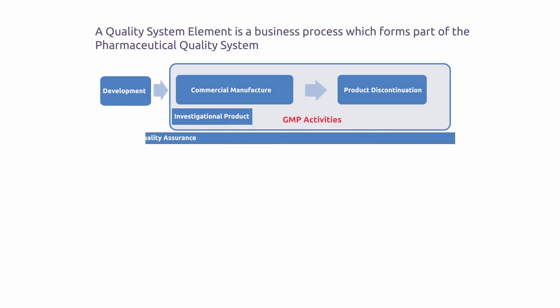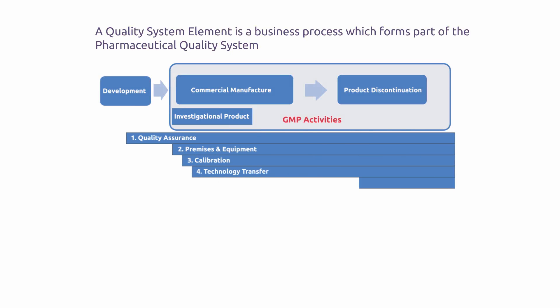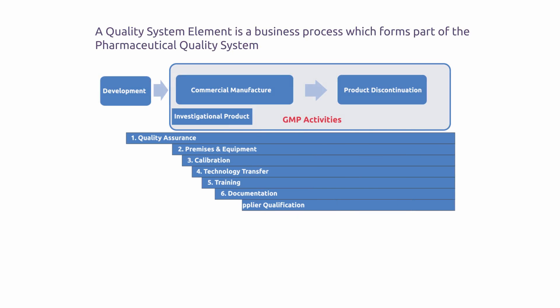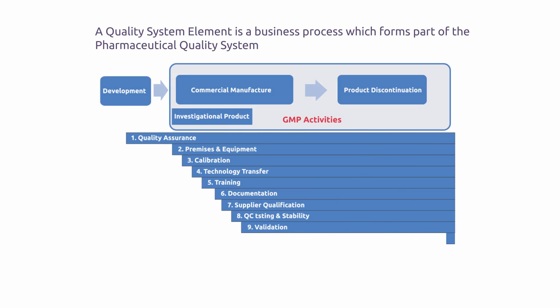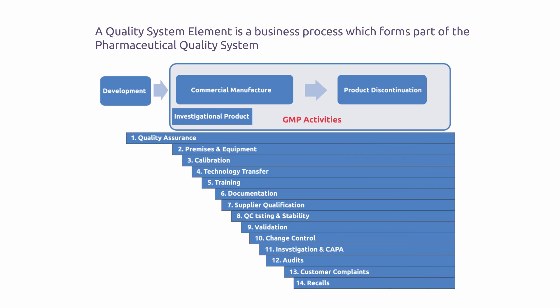Moving on, the concept of Quality System Element or QSE is introduced. This is a business process which forms part of the Pharmaceutical Quality System. We've broken it into 15 Quality System Elements in this course, and an overview of each of these is provided.